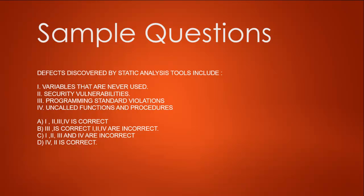So all the options look correct to me. Let's find out what we have to choose. Option A says all the options are correct. B says 3 is correct and rest are incorrect. C says 1, 2, 3, 4 all are incorrect, and D says 4 and 2 are incorrect. As we already know, static analysis tools make use of unused variables, security vulnerabilities or issues, programming standard violations, and uncalled functions and procedures. So it all includes into it, so our option here is A. So that's our correct answer.